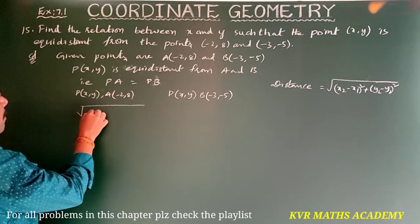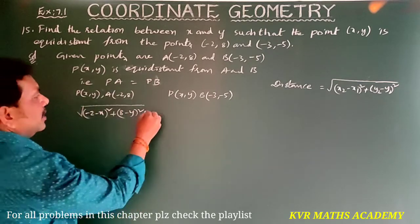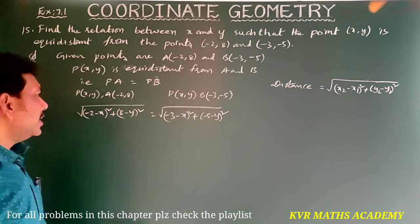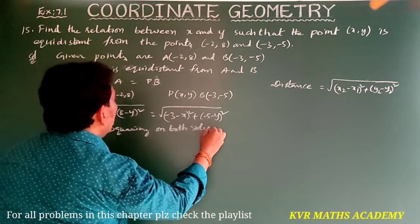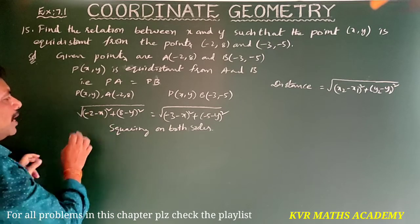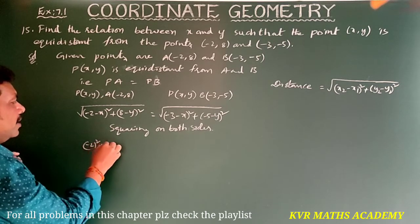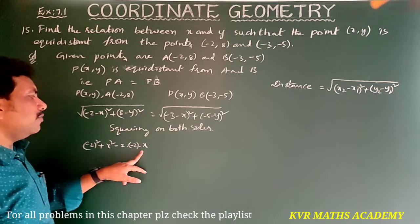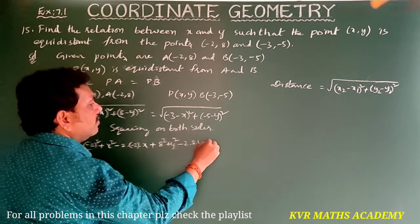PA equals PB gives: root of (-2 minus x) whole square plus (8 minus y) whole square equals root of (-3 minus x) whole square plus (-5 minus y) whole square. Squaring on both sides, the roots cancel. Expanding using (a minus b) whole square: (-2)² plus x² minus 2(-2)x plus 8² plus y² minus 2(8)y equals the right side.